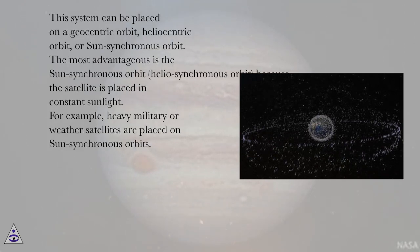This system can be placed on a geocentric orbit, heliocentric orbit, or sun-synchronous orbit. The most advantageous is the sun-synchronous orbit, heliocynchronous orbit, because the satellite is placed in constant sunlight. For example, heavy military or weather satellites are placed on sun-synchronous orbits.